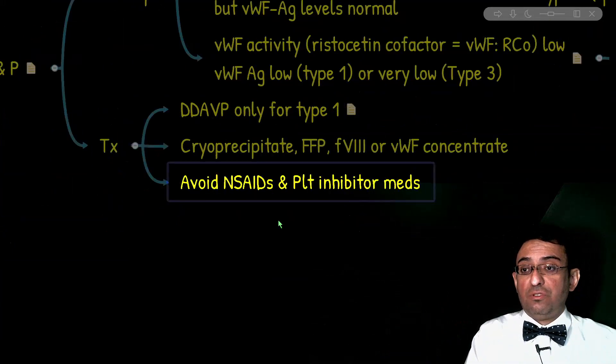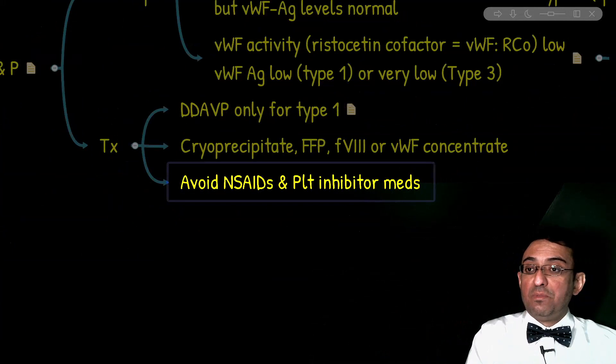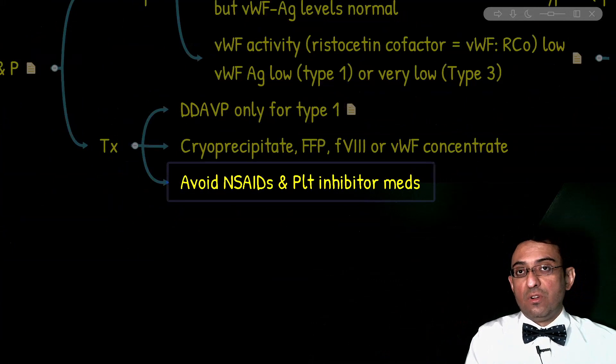And finally, how should we educate the patients in regard to preventing bleeding in von Willebrand disease? Patients should not take NSAIDs and other platelet inhibitor medications. If a woman with von Willebrand disease has menorrhagia, how do we manage that? With OCPs.